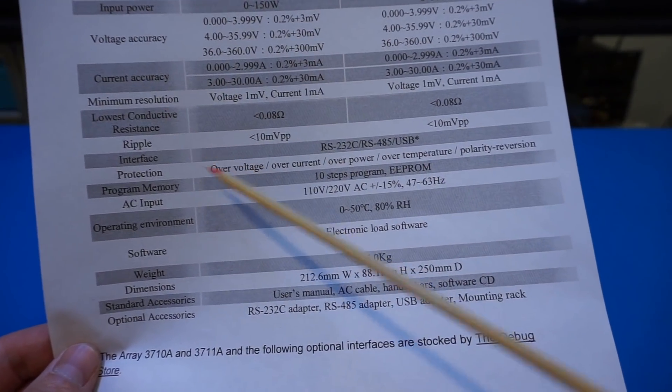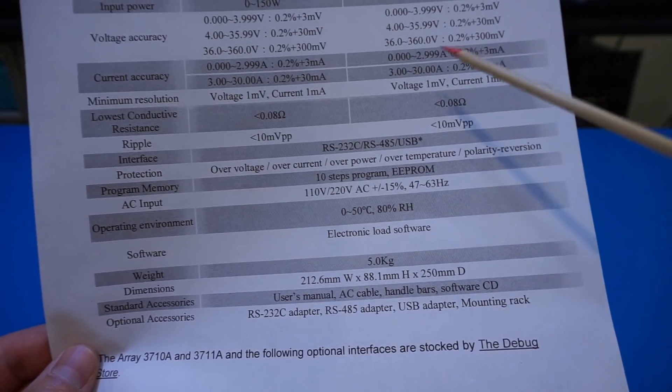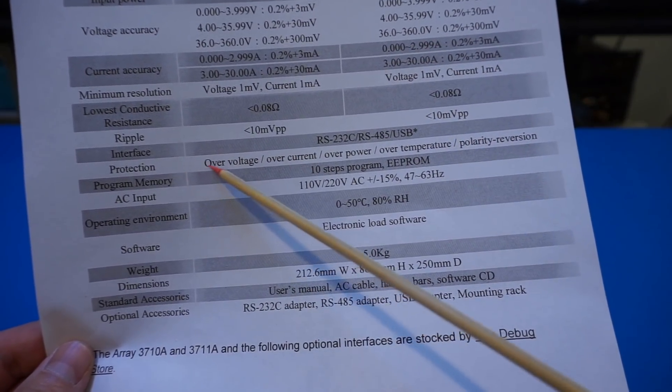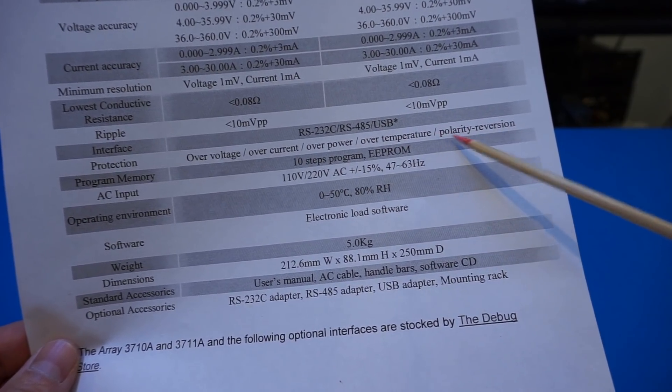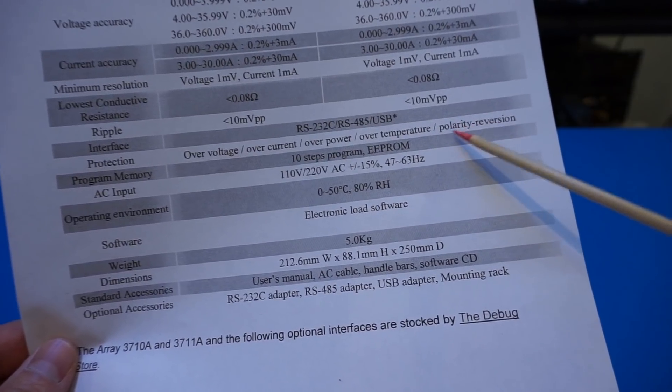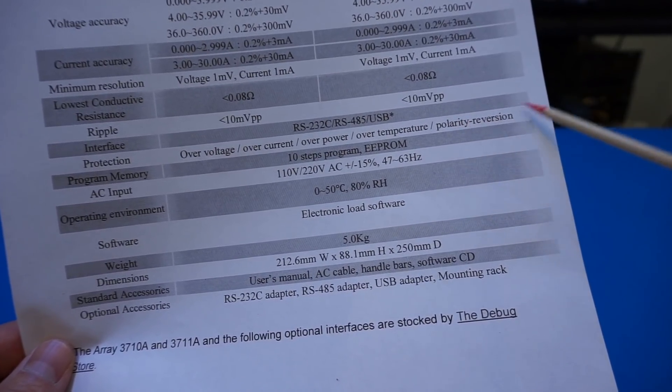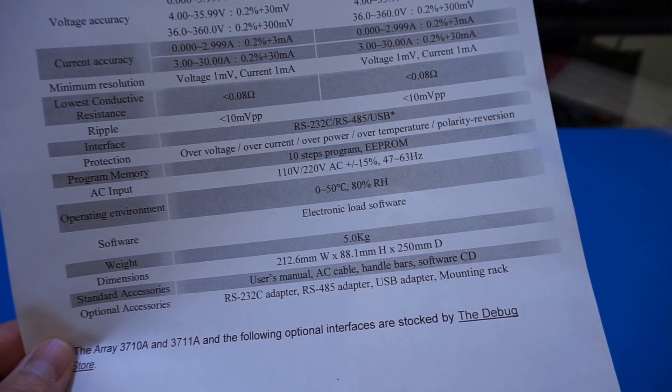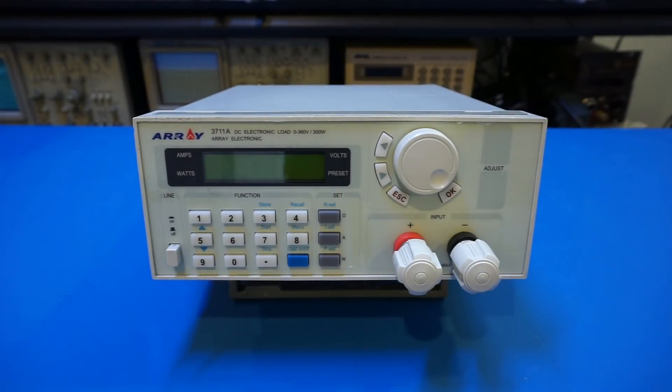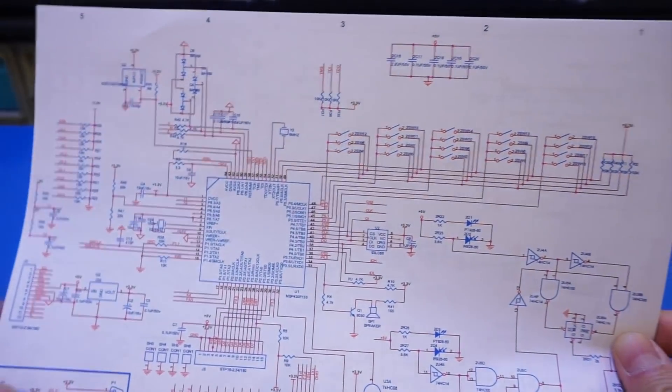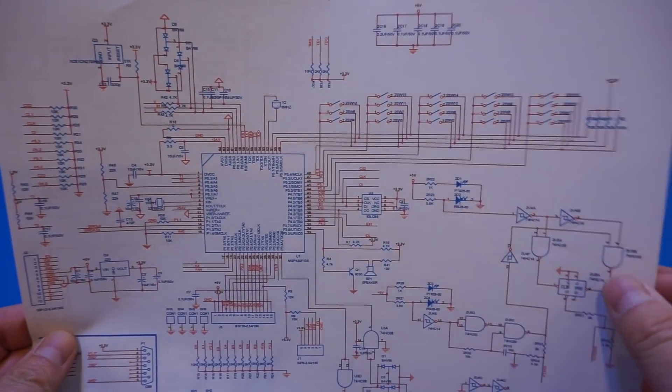Of course besides the general load capabilities you also have some protection: over voltage, over current, over power and over temperature, and interestingly you also have this polarity reversion detection which is very good so we can probably test it out later when we do a testing video. So that's pretty much all there is on the spec side and one of the benefits of getting one of these electronic loads is that the circuit diagrams are readily available. So what I have printed out here is the circuit diagram for this electronic load.